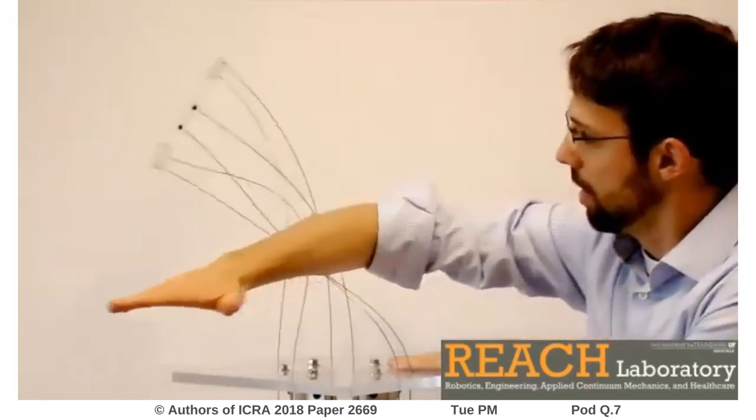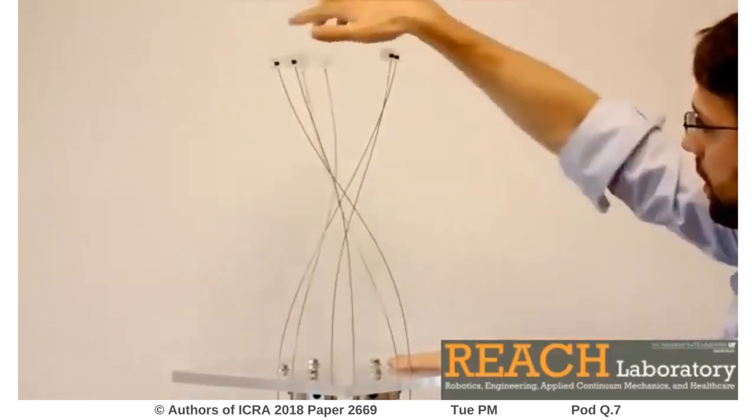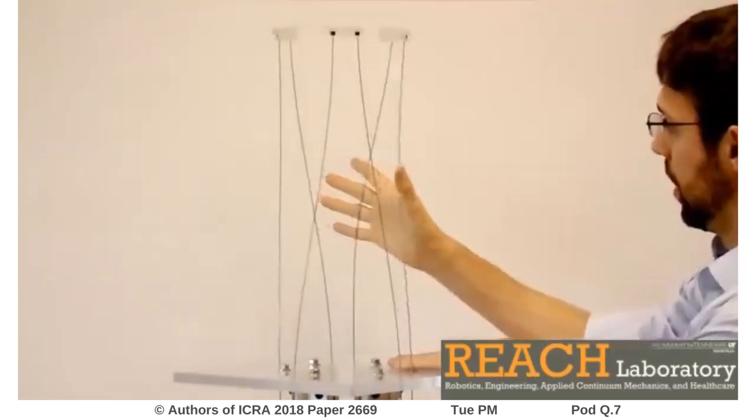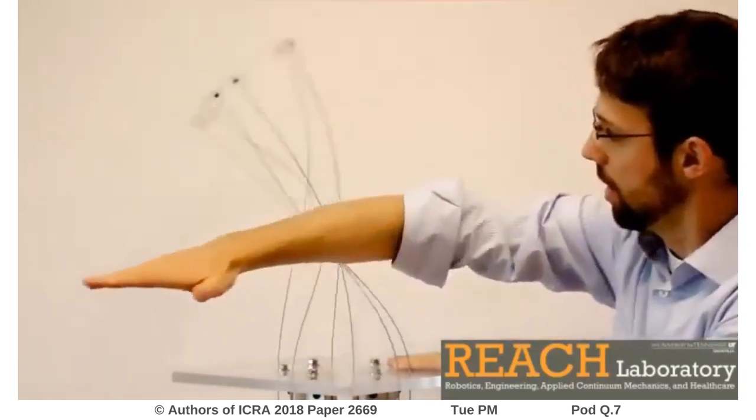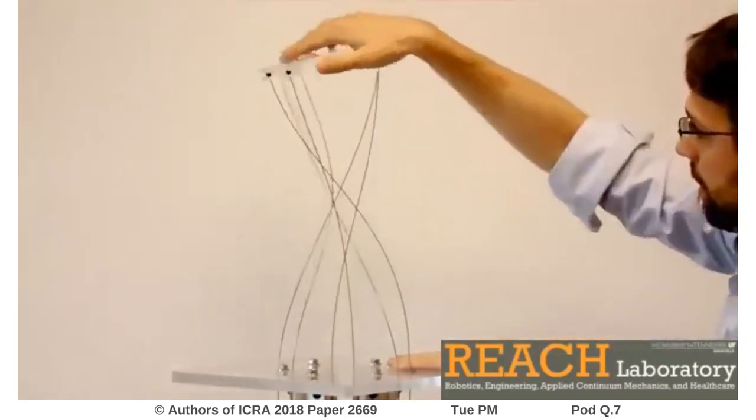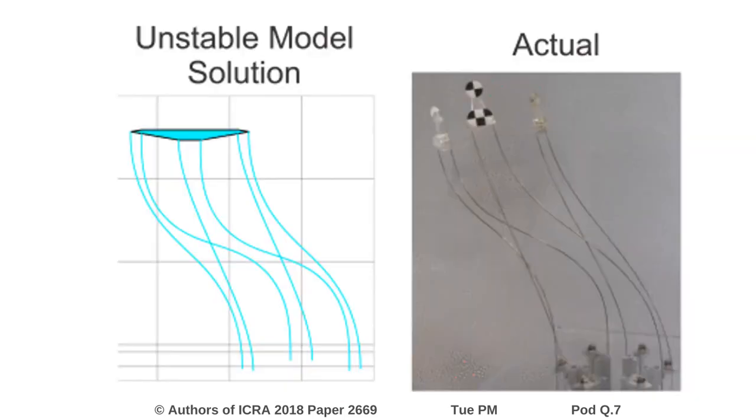Numerically computed solutions of static continuum robot models typically satisfy the first-order conditions necessary for equilibrium, but do not provide any information about the elastic stability of the solution. The inability to detect or avoid physically unstable model solutions poses a major hindrance to reliable model-based simulation, planning, design, and control.